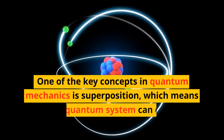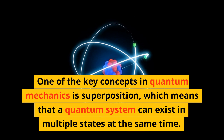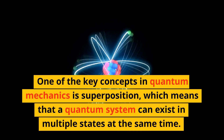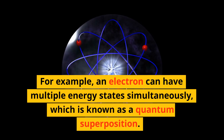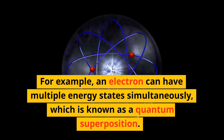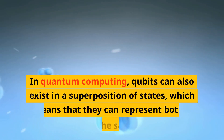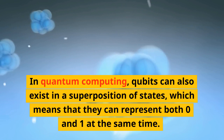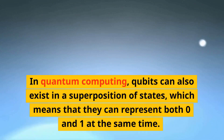One of the key concepts in quantum mechanics is superposition, which means that a quantum system can exist in multiple states at the same time. For example, an electron can have multiple energy states simultaneously, which is known as a quantum superposition. In quantum computing, qubits can also exist in a superposition of states, which means that they can represent both zero and one at the same time.